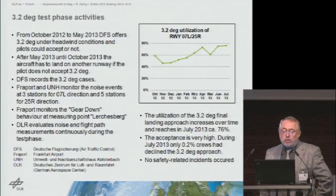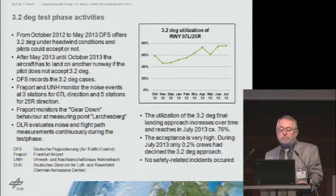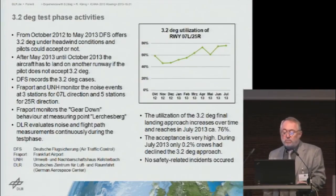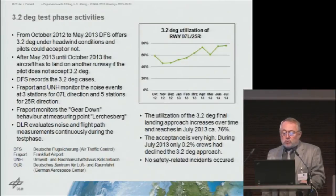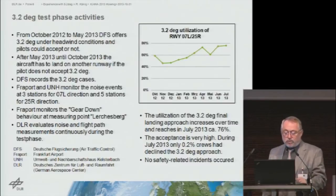Starting from October 2012 through May 2013, the DFS offered 3.2 degrees as an approach angle, and pilots were asked to either accept or decline. After May 2013 and up until the present day, this option no longer existed — if pilots weren't willing to fly the 3.2-degree angle, they had to go to another runway. DFS monitored the 3.2-degree cases, recording when aircraft came down at that angle. Fraport and UNH provided measurement stations: 3 on the left and 5 on the right.